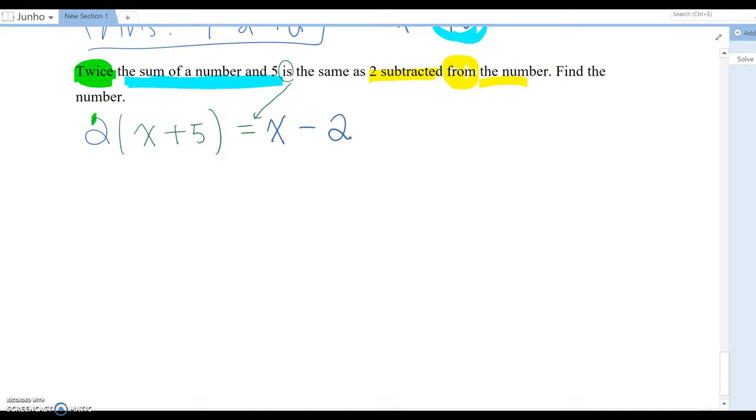So one more time, twice, two times the sum of a number and five, so x plus five is the same, so equal, two subtracted from, this way minus two, the number, so x. Okay.